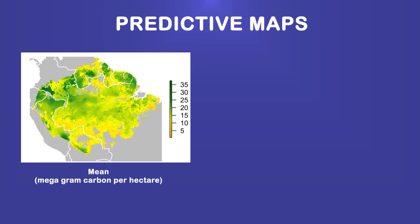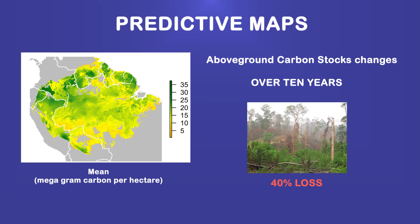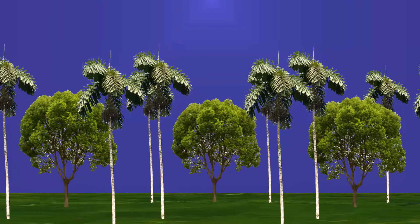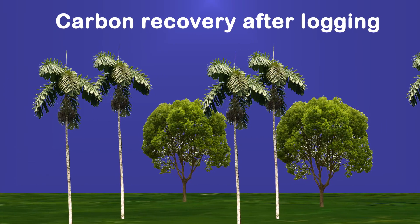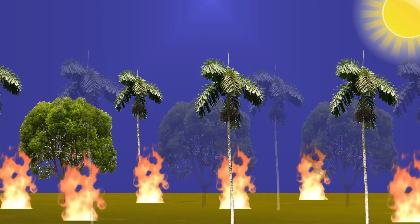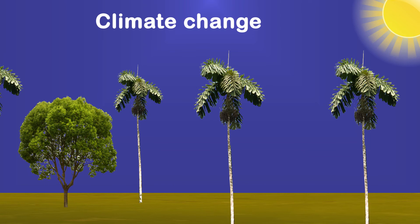Finally, we elaborated predictive maps of potential above-ground carbon stocks' changes over 10 years under the hypothesis of a 40% above-ground carbon stocks loss. While our study focuses mainly on carbon recovery after logging, our findings may also give useful clues to predict forests' responses to carbon loss from fires and other events brought on by climate change, which is ironically caused in part by mass disturbance and deforestation.